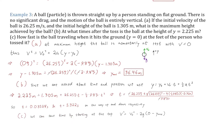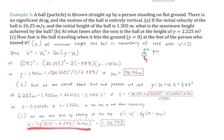For Part C, we can save time by starting at the top and finding the velocity when the ball hits the ground. The maximum height is 36.46 meters. Plugging in, we get a plus-or-minus square root, and in this case only the negative solution makes physical sense, because when the ball hits the ground it must be moving in the negative y direction.